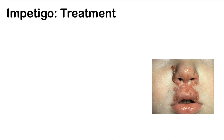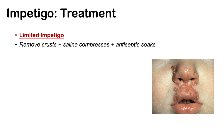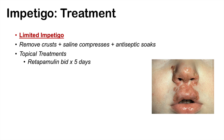Now that we've discussed the subtypes, how do we treat Impetigo? Treatment is generally determined by severity. For limited Impetigo, we can conservatively remove the crusts carefully, do saline compresses, and antiseptic soaks. But we'll often use topical treatments — retapamulin twice a day for five days, mupirocin three times a day for five days, or fusidic acid. Note that some of these treatments aren't available in all countries.